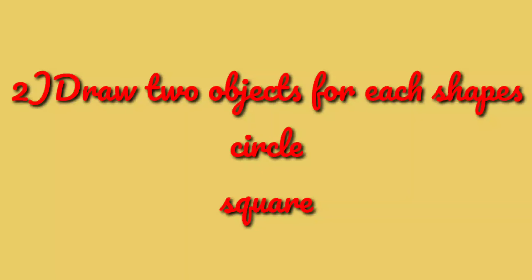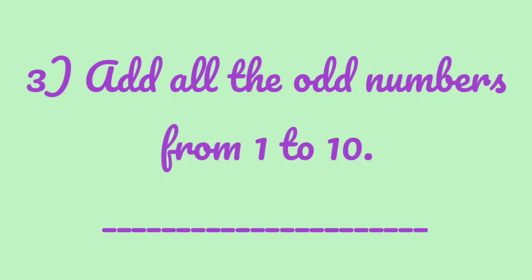Number 3: add all the odd numbers from 1 to 10. So you have to add all the odd numbers from 1 to 10. First you will write down all the odd numbers and then you will add them.